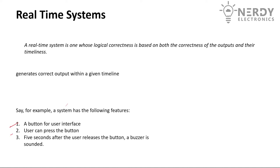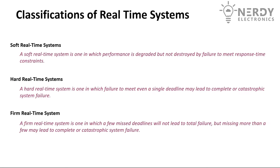Let's take an example. Say a system has the following features: a button for user interface. The user can press the button, and five seconds after the user releases the button a buzzer sounds. Five seconds is a really long time when we talk about embedded systems, but this particular system can be classified as a real-time system because it gives a correct output — the sounding of the buzzer — exactly after five seconds. We know that in five seconds the buzzer will be sounded.